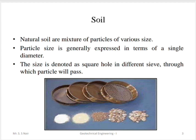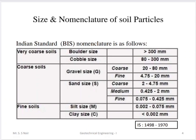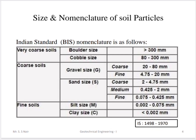Natural soil is a mixture of various sizes of particles. To determine the particle size, a square hole sieve is used, expressed in single diameter size. According to Bureau of Indian Standards IS 1498:1970, soils are described as: boulder — greater than 300 mm; cobble — 80 to 300 mm; gravel — 20 to 80 mm; and coarser gravel — 4.75 to 20 mm.